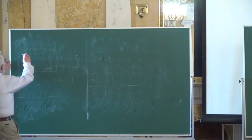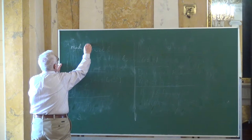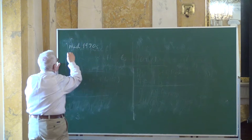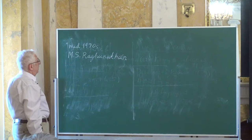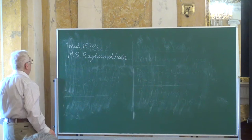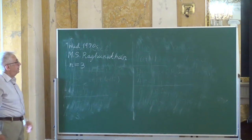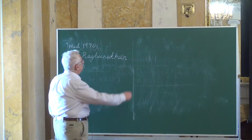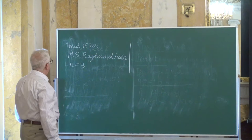Then in the mid-1970s, the Indian mathematician Raghunathan came with a remarkable observation: the Oppenheim conjecture, at least for n = 3 (and hence for all larger n), can be reformulated as a dynamical statement.